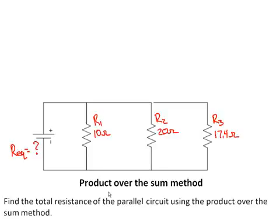Alright, this question asks us to find the total resistance of the parallel circuit using the product over the sum method. We know it's a parallel circuit because current has multiple paths to flow.